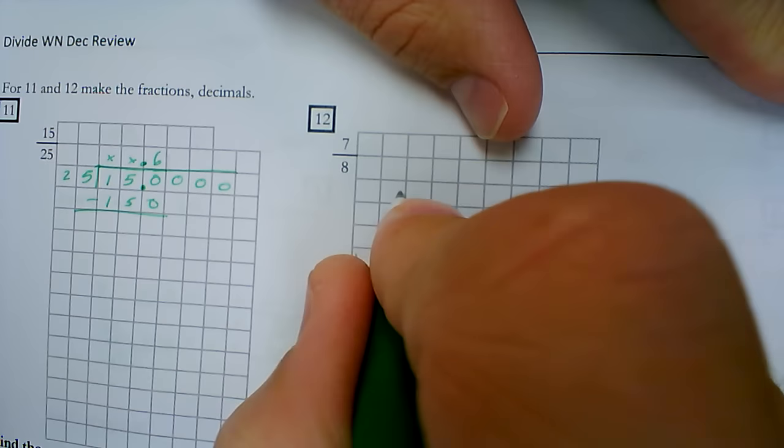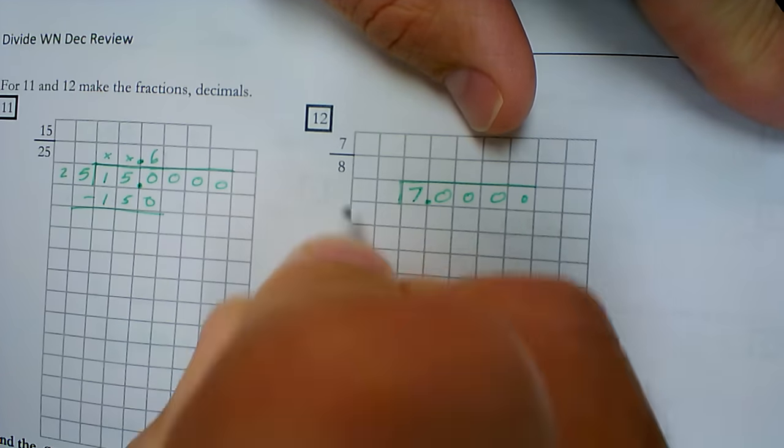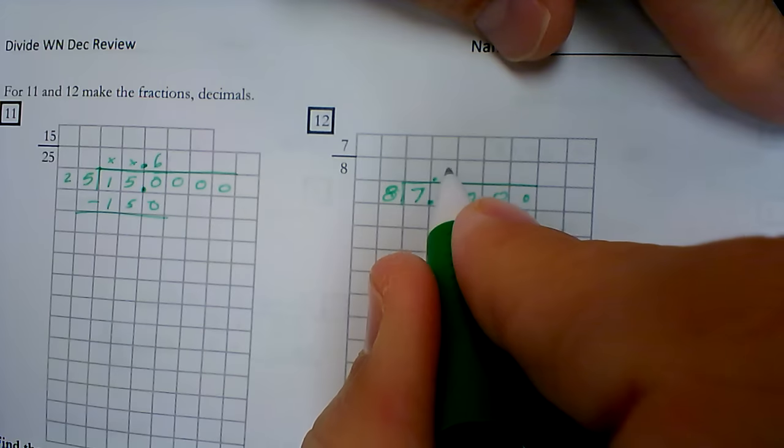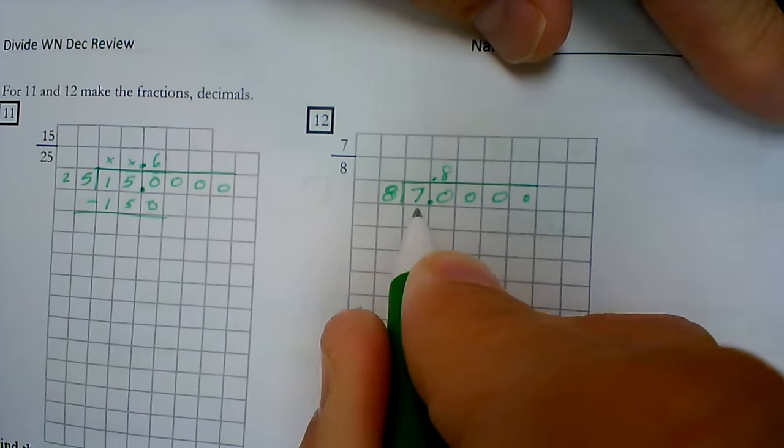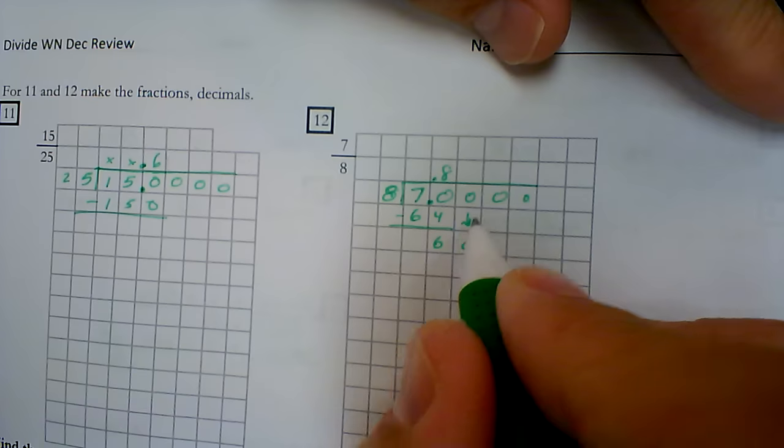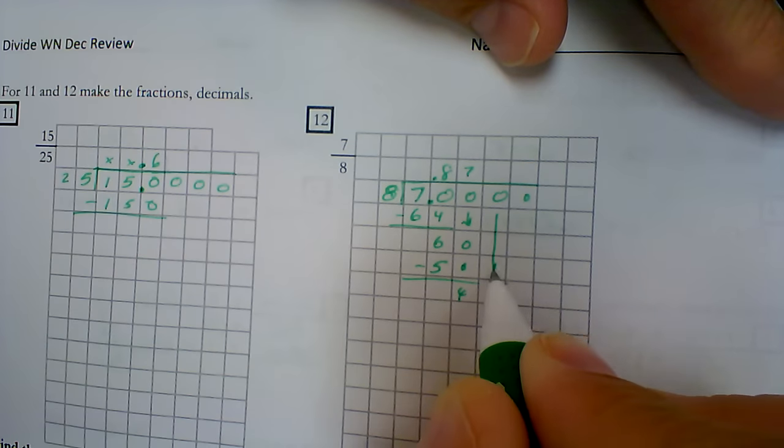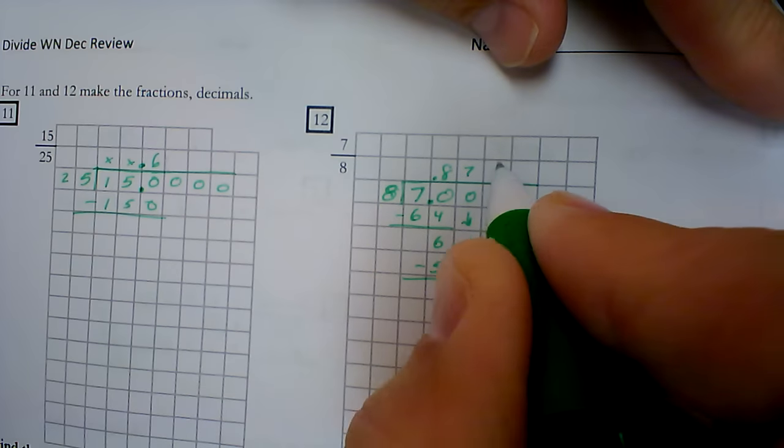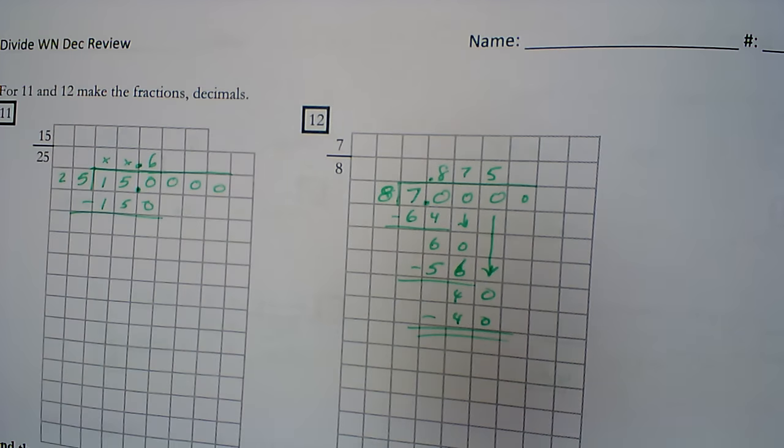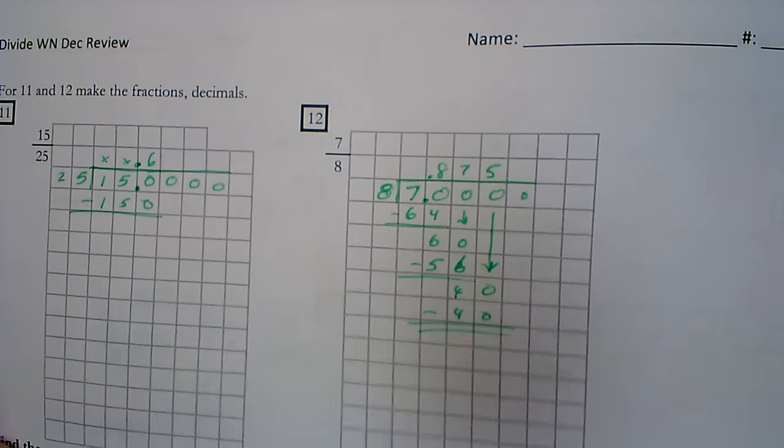Then I've got 7 divided by 8. Again, I'm adding my decimal point and four zeros. And then I divide. So I can get, let's see, that is 8 groups. 64. Subtract 6. Bring down the 0. 7. 56. Subtract. Bring down the 0. And that would be 5. Came out even. I'm done. So 875 thousandths. Again, 7 eighths is less than 1. 875 thousandths. Less than 1.